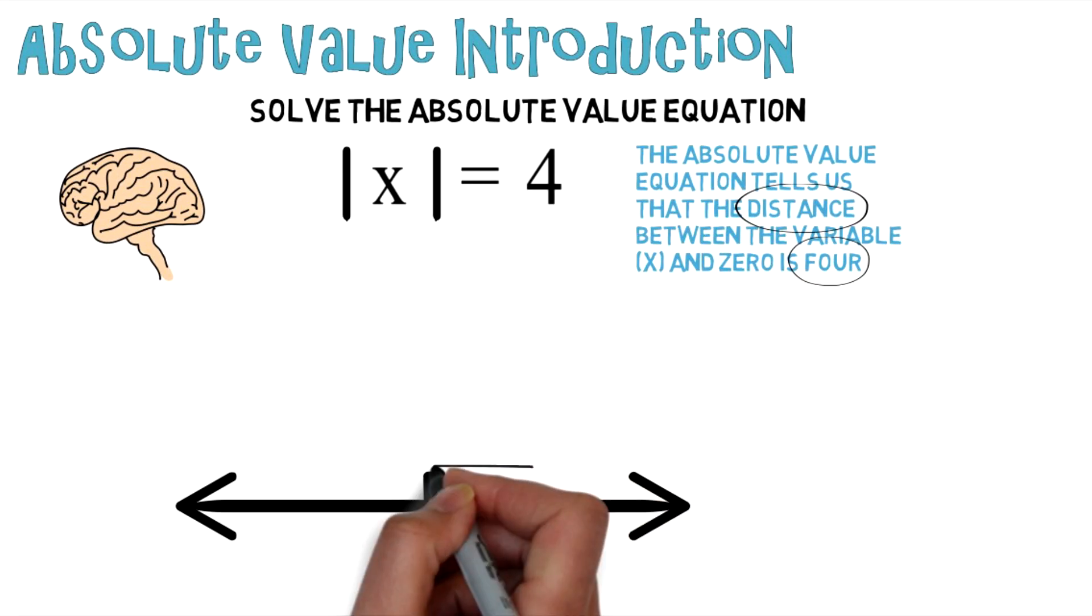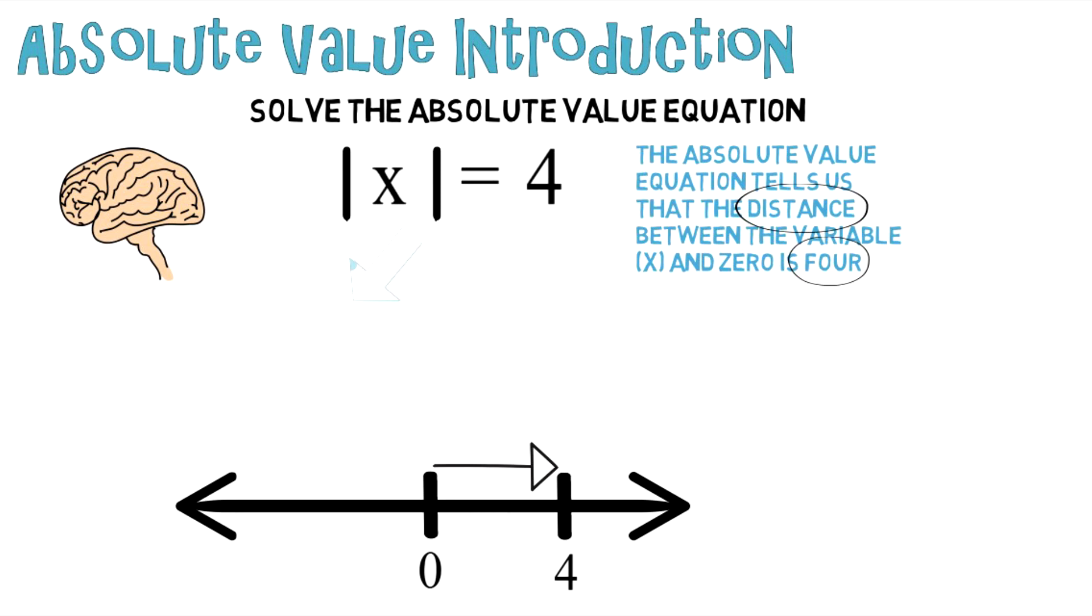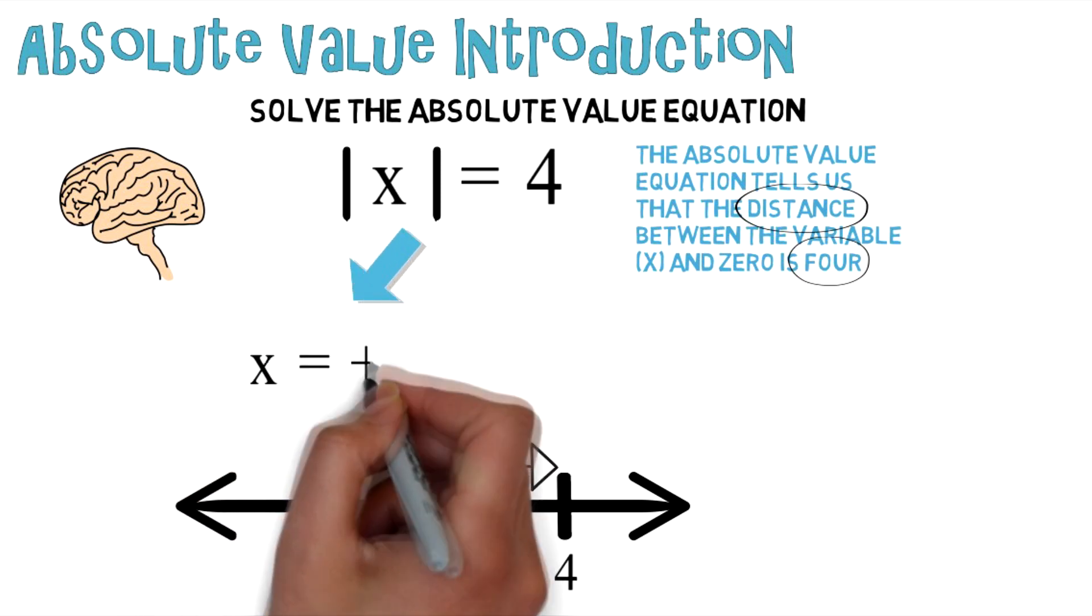Therefore, you can move four spaces in the positive direction. So we'll draw an arrow to positive four. And you can visualize that equation as X equals positive four.